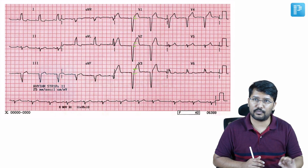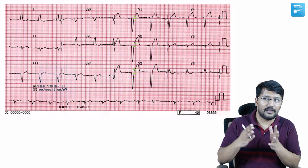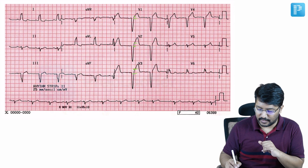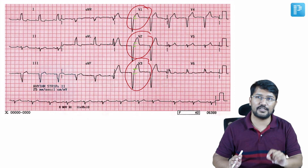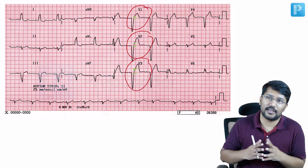What do I mean by discordant? The QRS complex and the ST elevation are in opposite directions. In other words, in leads where there is a predominant S wave — where the QRS complex is predominantly negative — we are seeing ST elevation, like we are seeing in this case. I assure you that this is an ECG of just LBBB and there is no myocardial infarction. The take-home point is that some degree of discordant ST elevation is a norm in patients with LBBB.